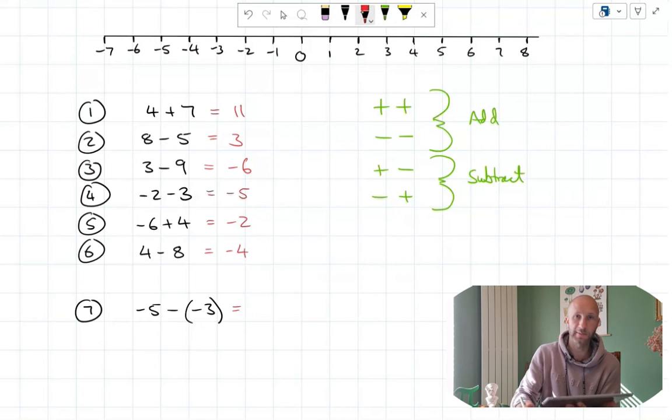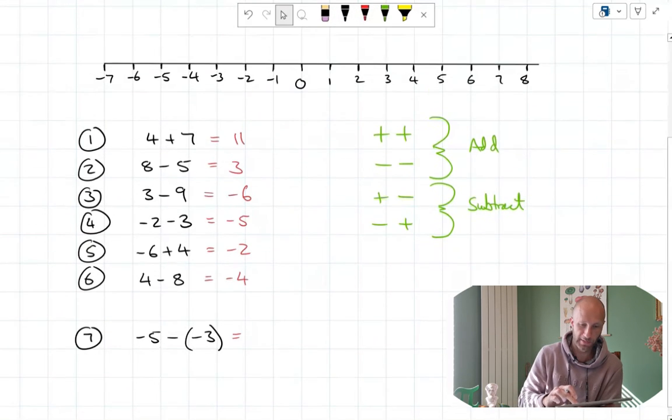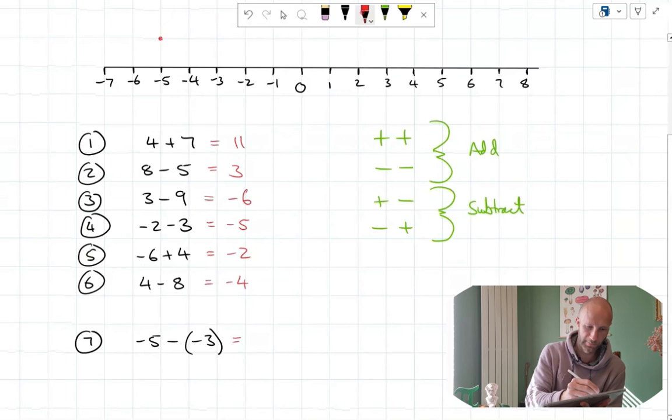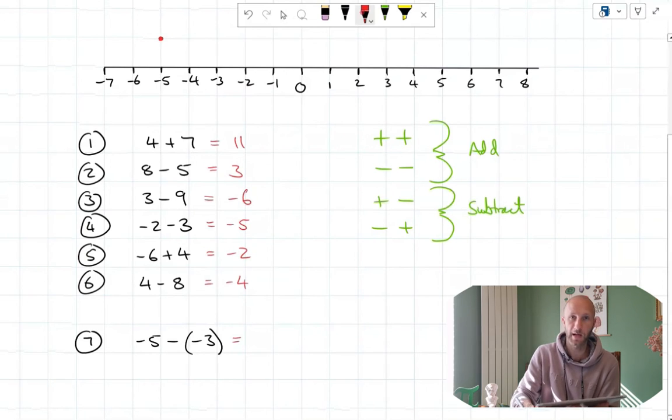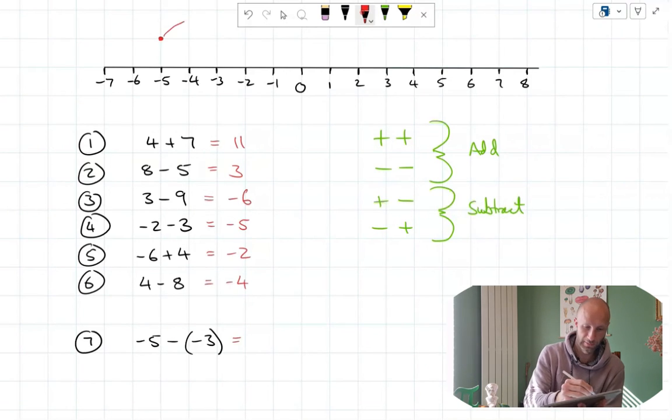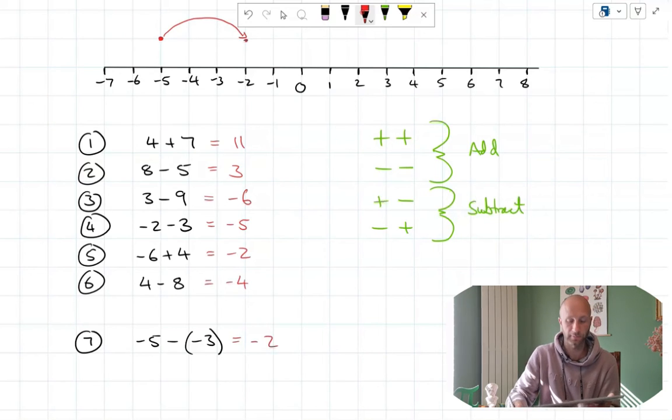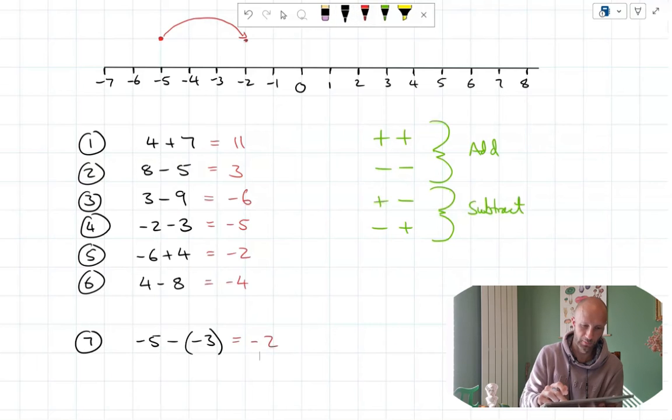So -5 - (-3), we're starting at minus five. Bring back to the number line. And then if I'm minusing minus three, I'll actually add three on. So I've moved in the positive direction, and that will take me to negative two. That's how it works.